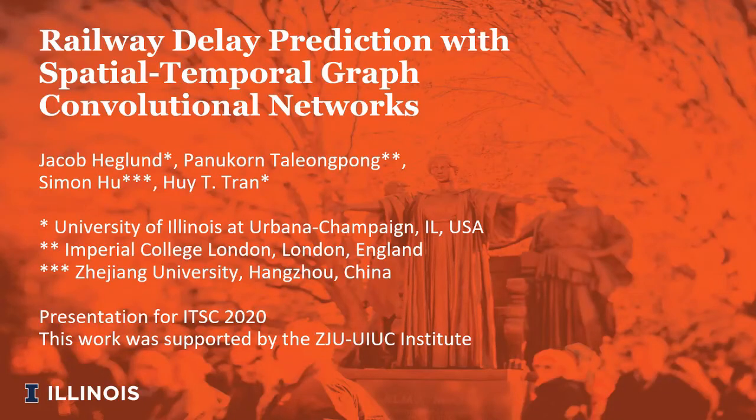Good afternoon everyone, my name is Jacob Heglund and today I'm presenting our submission to ITSC 2020 titled Rail Delay Prediction with Spatial Temporal Graph Convolutional Networks. Before we get started, I'd like to acknowledge my co-authors, Pnukorn Taliyongpong, Professor Simon Hu, and Professor Hui Tran. This work was supported by the ZJU UIUC Institute and we are excited to be working on future projects as part of this collaboration between universities.